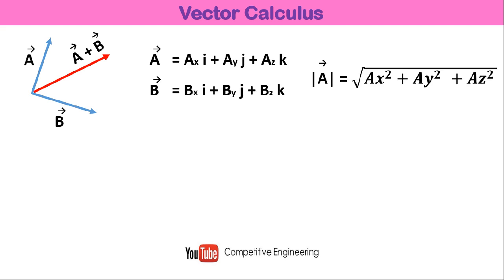The magnitude of any vector A, denoted as |A|, is equal to the square root of Ax² + Ay² + Az² — that is, the square root of the sum of the squares of the components along each direction. Similarly, the magnitude of vector B is the square root of Bx² + By² + Bz². A vector divided by its magnitude gives a unit vector in the direction of A.